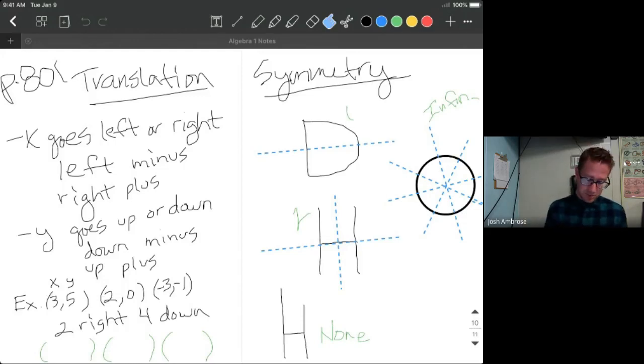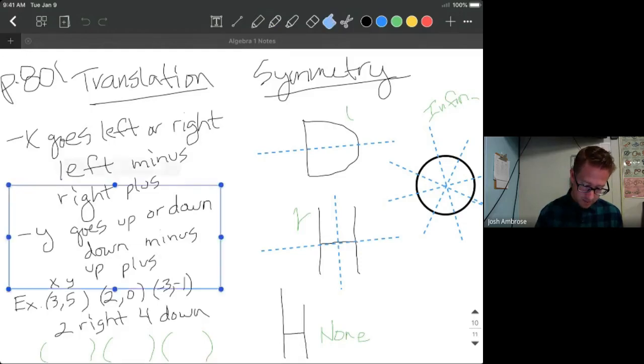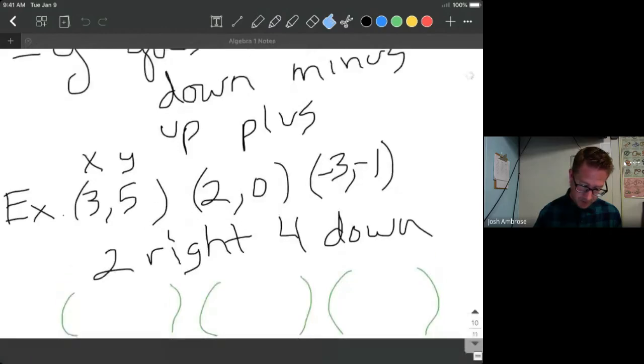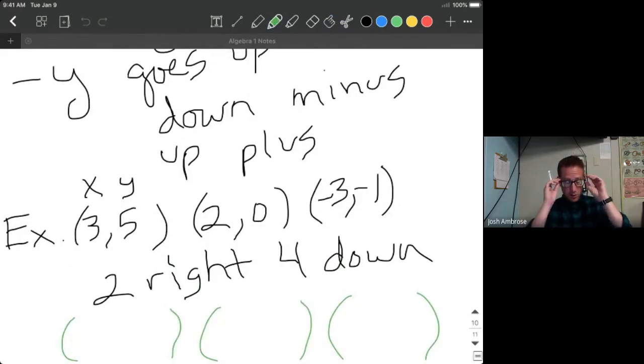So let's take a look at what this would be in our example problems here. So we have original coordinates are 3, 5, 2, 0, and negative 3, negative 1. And then right below it, your directions are 2 to the right. So that means right, take a look at the notes, we are plus, we are adding 2 to every x value. And then it says 4 down. That means our y values, if we go down, that means minus. So we're going to be subtracting 4 from every y value. And let's go ahead and let's see, let's zoom in here if we can. Okay, so we have our originals, we have the directions, and we have some blank green parentheses there that are going to cover our brand new translations.